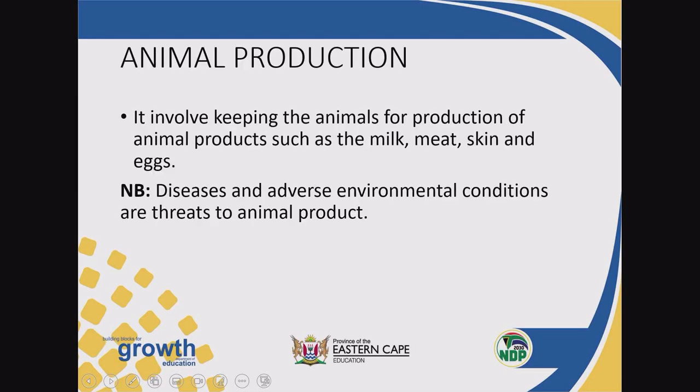Animal production involves keeping animals for the production of animal products such as milk, meat, skin, and eggs. But production will be affected by diseases and adverse environmental conditions. These are the threats when it comes to the products that will be produced by animals.